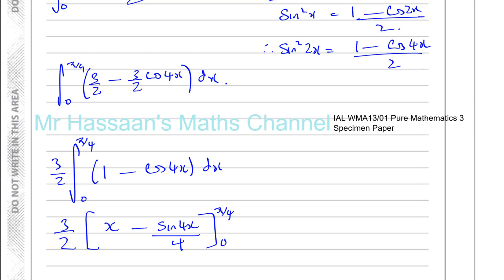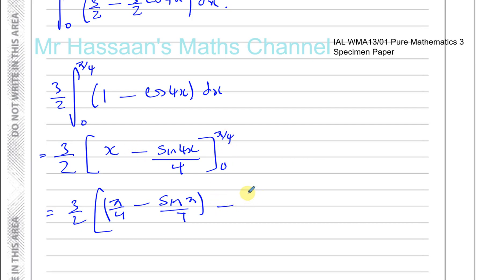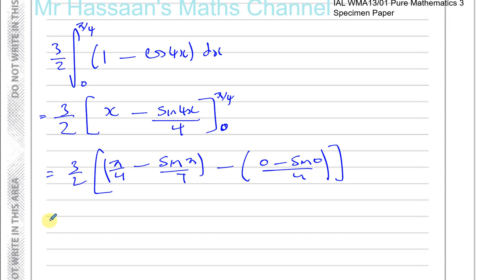Now substituting the limits, multiplied by 3/2: when x = π/4, we get π/4 minus sine(4 × π/4)/4 = π/4 minus sine(π)/4. When x = 0, we get 0 minus sine(0)/4. It's important to substitute into both parts — don't assume the lower limit always gives 0, for example with cosine or exponentials it wouldn't. In this case it does become 0.